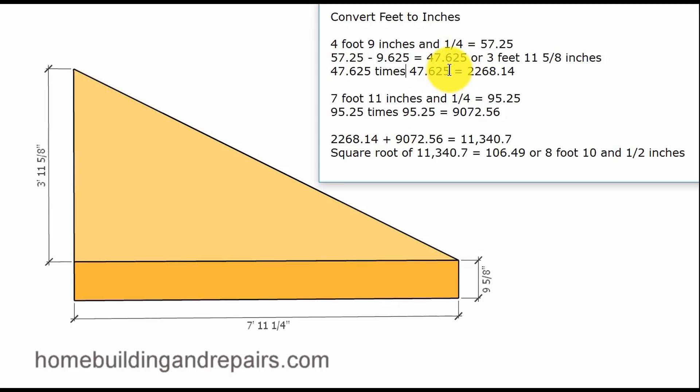That gives us forty seven point six two five or forty seven and five-eighths inches. And if we convert the decimal to inches it will give us three foot eleven and five-eighths inches which is what we have here.